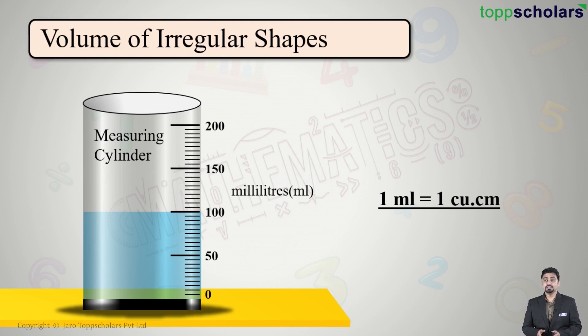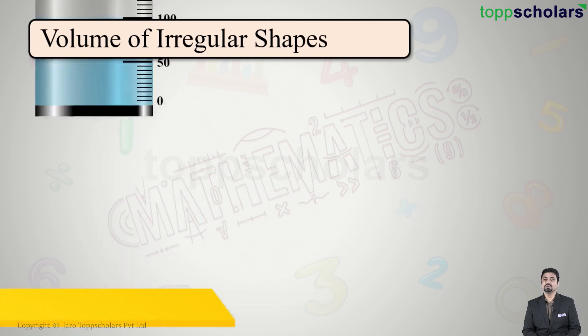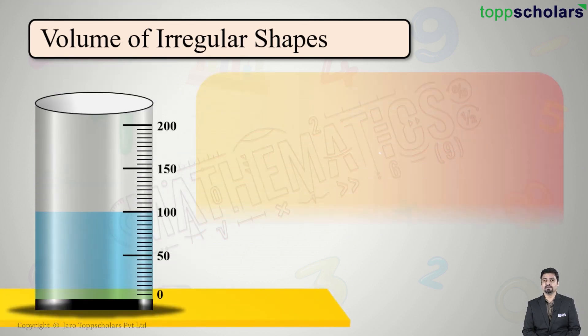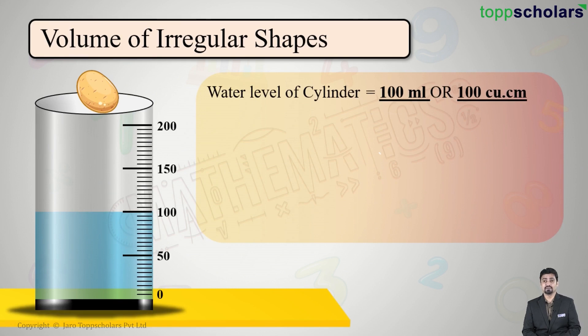So basically I am trying to connect milliliters with volume because cubic centimeter is the unit of volume, right? So one milliliter is one cubic centimeter. To find volume of irregular shapes, I take this measuring cylinder and the water level of the cylinder right now is 100 ml, that is 100 cubic centimeters.